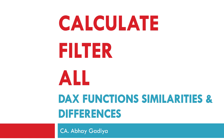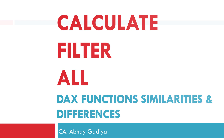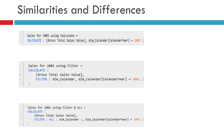Now imagine that I have provided you these three DAX measures. I would like you to guess what the results from each one of them will be based on the explanations provided in previous videos. In all of these measures, you would notice that we are filtering the values for the year 2000 by mentioning it inside the filter parameter of the CALCULATE function.